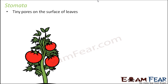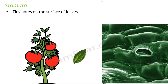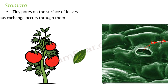Let us try to understand stomata in more detail. These are tiny pores on the surface of leaves. When you focus on one particular leaf and observe it under a microscope, you actually see the presence of these pores — and these pores are stomata. They are so tiny that they cannot be seen with the naked eye; you will be able to see them only when you use a good microscope. Through these pores, carbon dioxide gets inside the plants and oxygen is thrown out, so gaseous exchange occurs through these stomata.